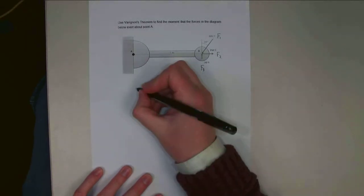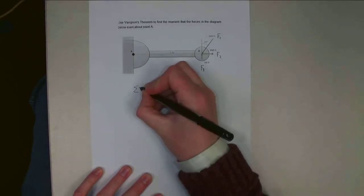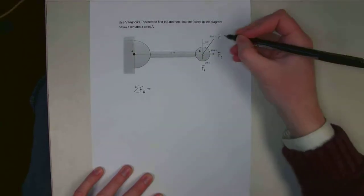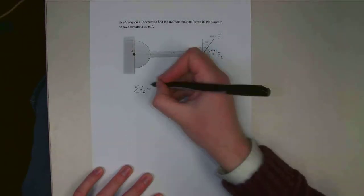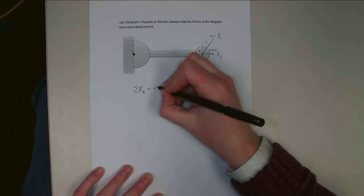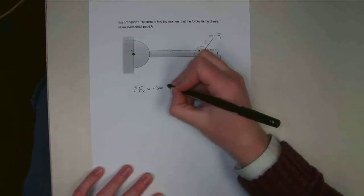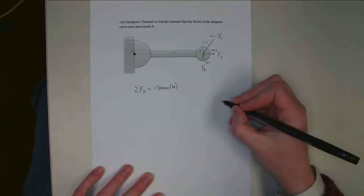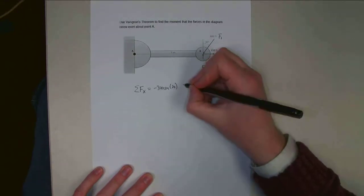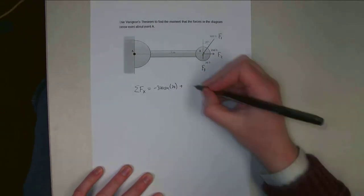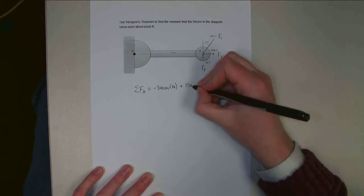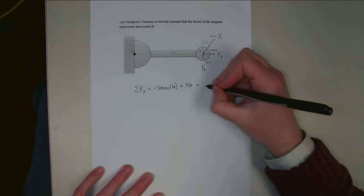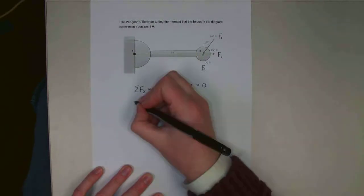So if I do that, I'm going to do the sum of forces in the x direction, and that's going to be F1, so it's going to be negative 300 sine 30, and then for F2, I'm going to have plus 150 newtons. And so if I sum those two things together, I find the sum of forces in the x direction is actually equal to zero.